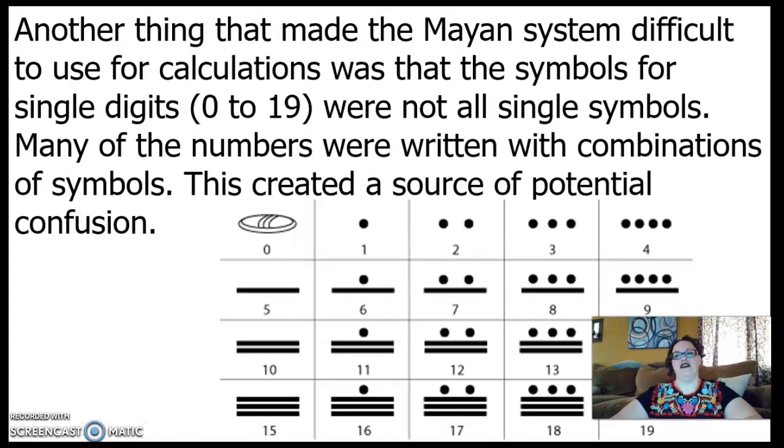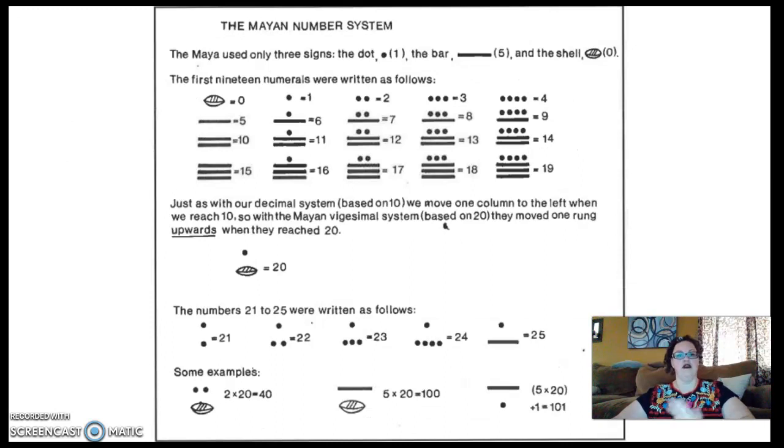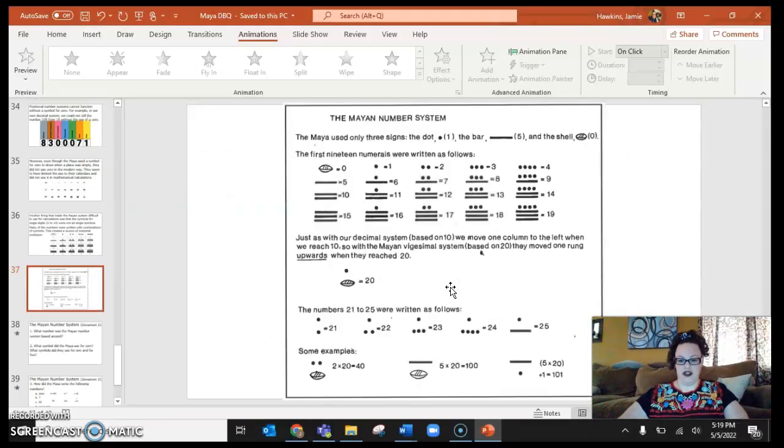Another thing that the Mayan system, another thing that made the Mayan system difficult to use for calculations was that the symbols for single digits, zero to 19 were single digits, were not all single symbols. Like we just said, two is two dots. Seven is a bar in two dots. Right? We see how this works? Okay. Many of the numbers were written with combinations of symbols. So this created a source of potential confusion. You know, actually, let's go to the document itself.